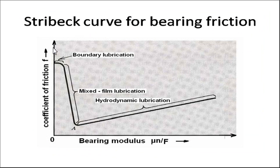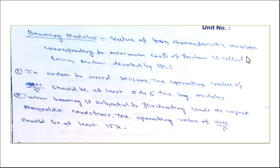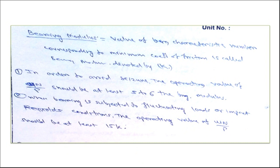This curve is also called the Stribeck curve, where the y-axis is coefficient of friction and the x-axis is bearing modulus μ·N/p. The regions are: boundary lubrication, mixed film lubrication, and hydrodynamic lubrication. Bearing modulus is the value of the bearing characteristic number corresponding to the minimum coefficient of friction, denoted by k. To avoid unstable operation, the operating value of μ·N/p should be at least 5 to 6 times the bearing modulus under normal conditions, and at least 15 times the bearing modulus under fluctuating loads or impact conditions.